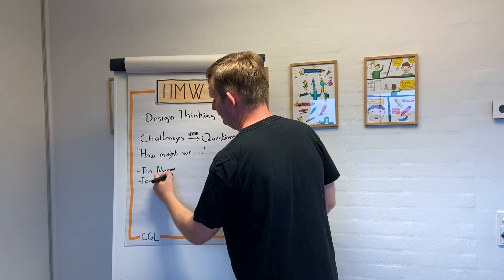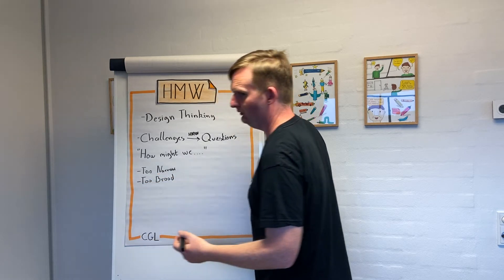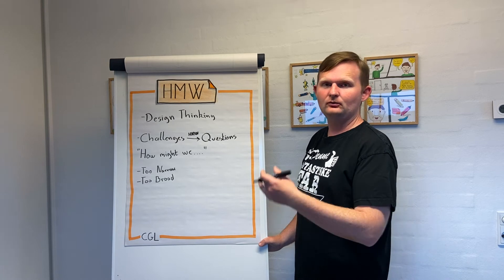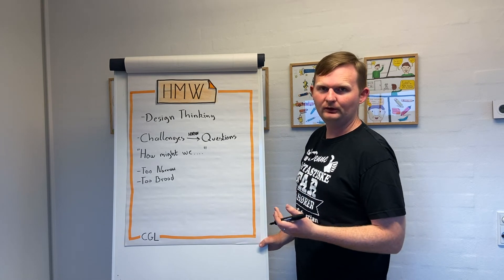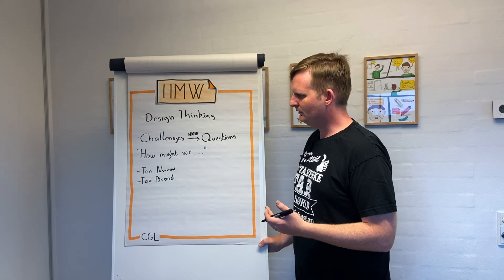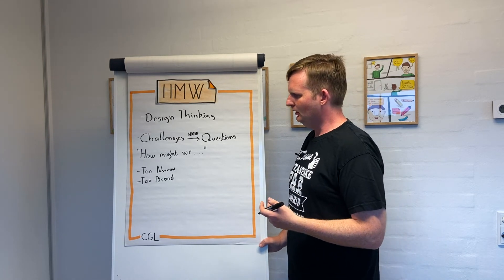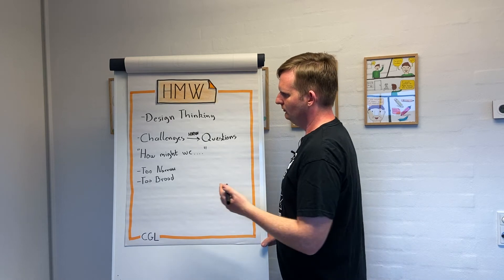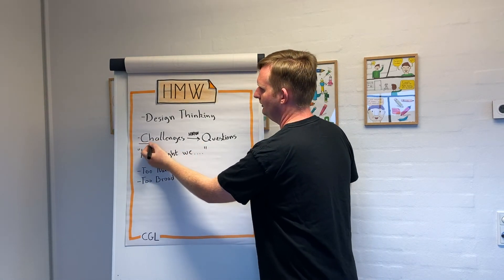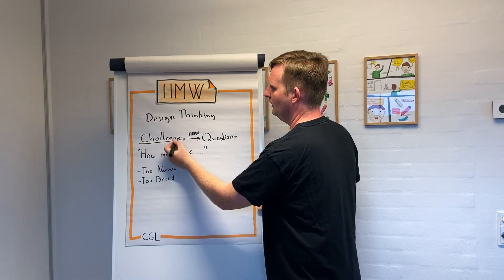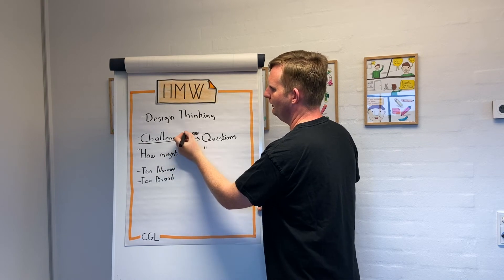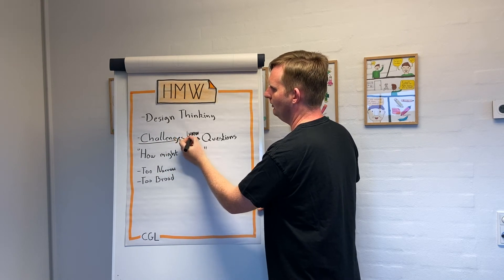You can also be too broad — like 'How might we fix world peace?' So the core process is: take a challenge, and then rephrase it into a 'How Might We' question.